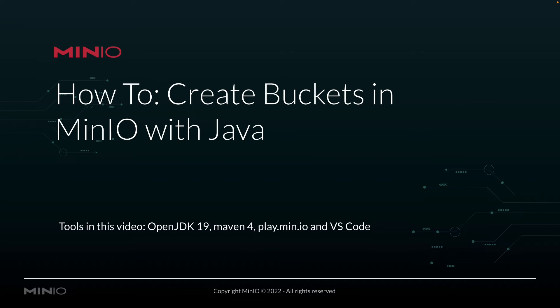Hi folks, Will from Min.io here with a Java how-to on creating buckets in Min.io. We're going to be using OpenJDK 19 and Maven 4 to manage all of our Java work. We're going to be connecting out to play.min.io, our online sandbox where anybody can work with the Min.io platform. And all of this is going to be run out of VS Code.